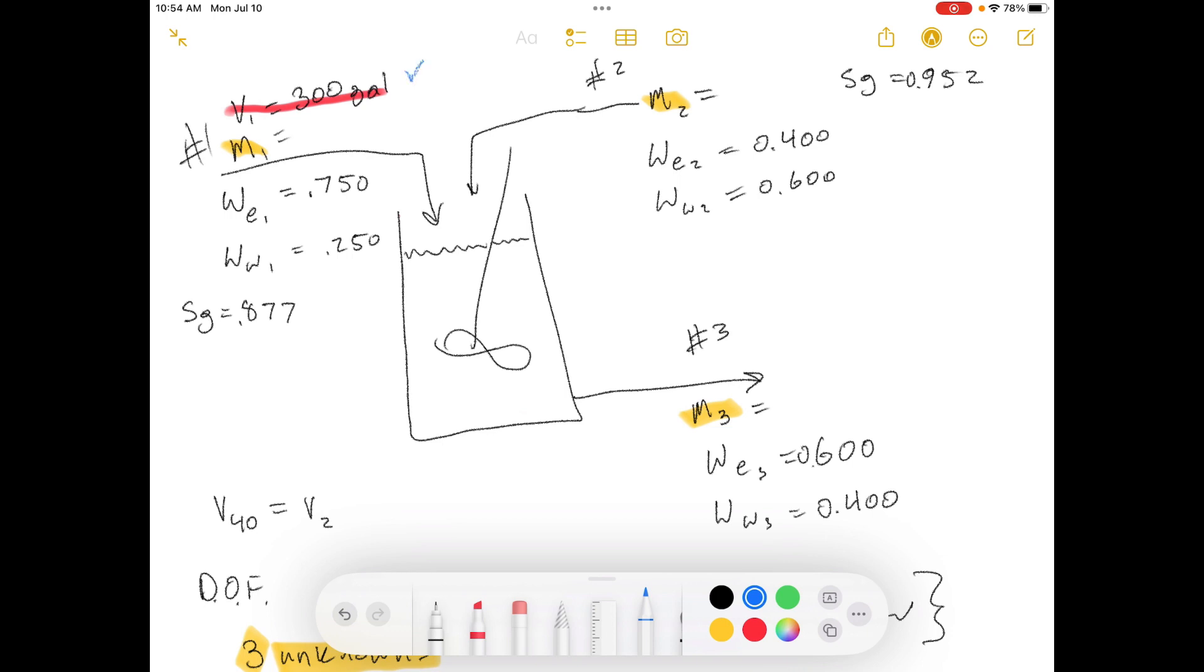We have 300 gallons of this mixture going into this container, and we want to know how much we have going into this mixture. I've labeled all the components here, and then they also give us these components.